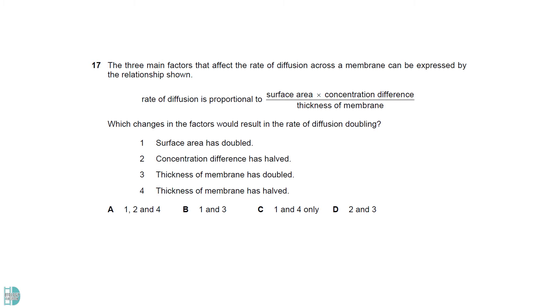To get a larger value for the rate of diffusion we need the two values on the top to increase or the value at the bottom to decrease. 1 and 4 are the correct options. 2 and 3 would have the opposite effect leading to a lower rate of diffusion.